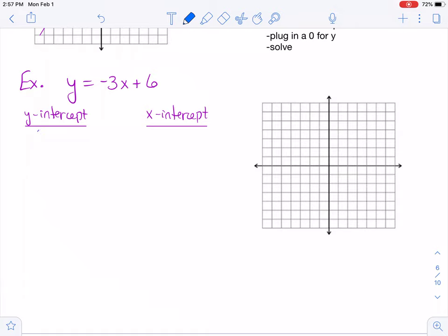If you do the y-intercept first here, you're going to plug a 0 in for x. So y = -3(0) + 6, which gives y = 0 + 6, so y = 6. The y-intercept is at (0, 6).